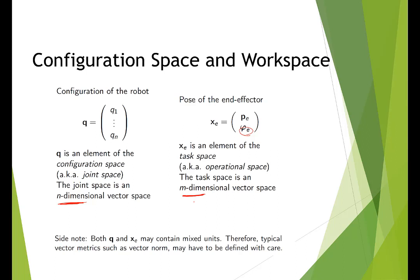Briefly, we talked about how M and N are related. If M is bigger than N, the robot is underactuated. If N is bigger than M, the robot is redundant — we have more degrees of freedom than required to do the task. In forward kinematics, we want to mathematically relate these two spaces.